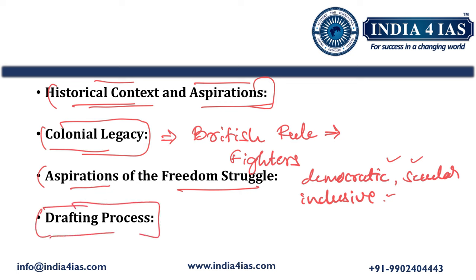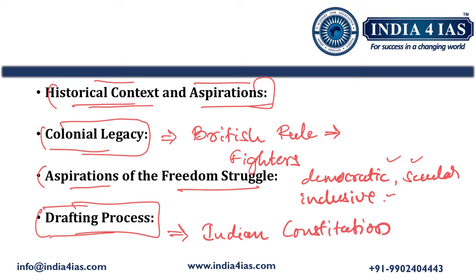We should also transition to the drafting process of the Indian constitution — how the constituent assembly was formed, what were the schemes or plans behind it, and what committees were responsible for drafting it. After explaining this historical context and aspirations for a democratic, social, secular, independent India, we should transition to the fundamental laws and principles enshrined in the Indian constitution.